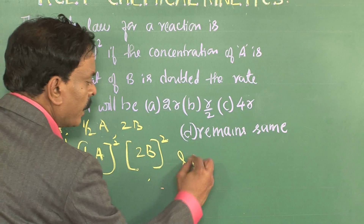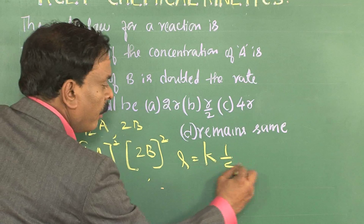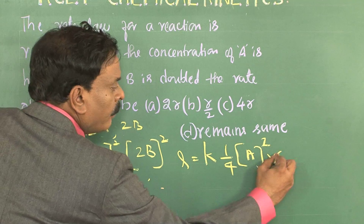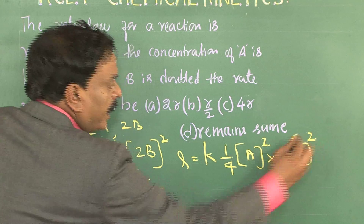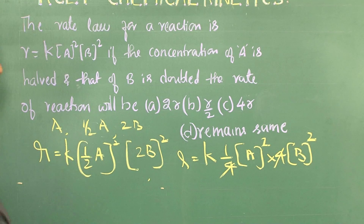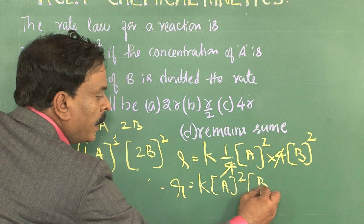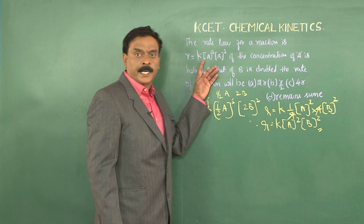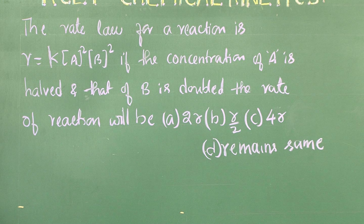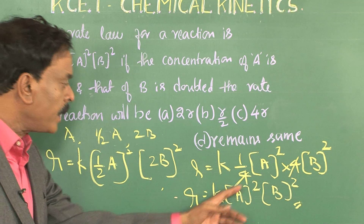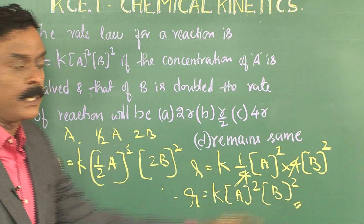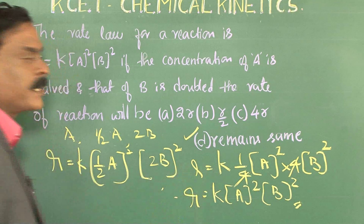On simplification: R = K × (1/4) × [A]² × 4 × [B]². The 4 and 4 cancel out. Therefore, the rate = K[A]²[B]², which is the same as the initial rate R = K[A]²[B]². Hence the correct answer is: the rate remains the same.